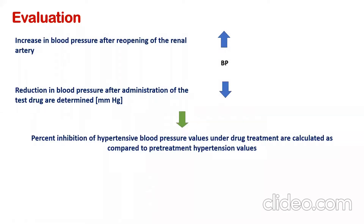For evaluation, first you observe the increase in blood pressure when you reopen the renal artery — that value is recorded. Then after administration of the drugs, the level of reduction in blood pressure is monitored, and by comparing these two values, the percent inhibition of the hypertensive blood pressure can be calculated and recorded.